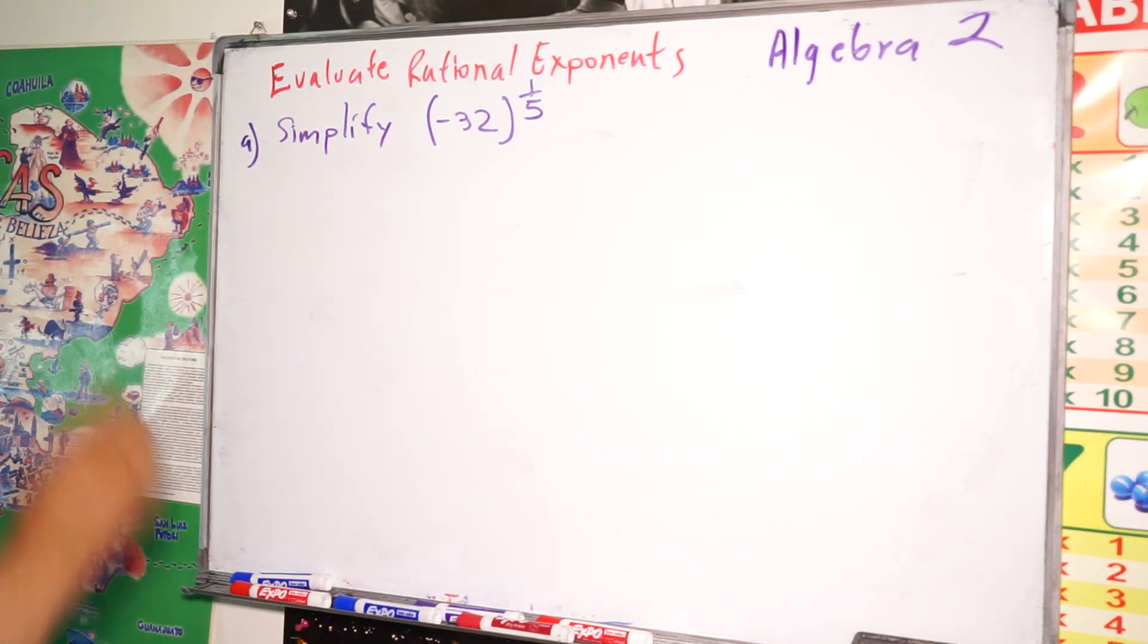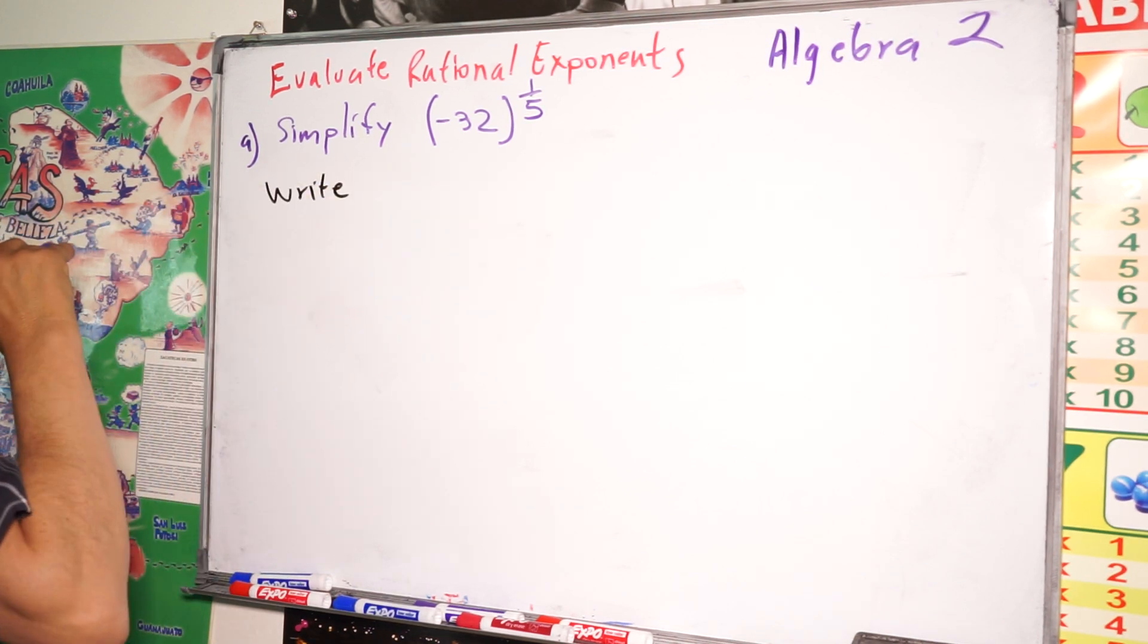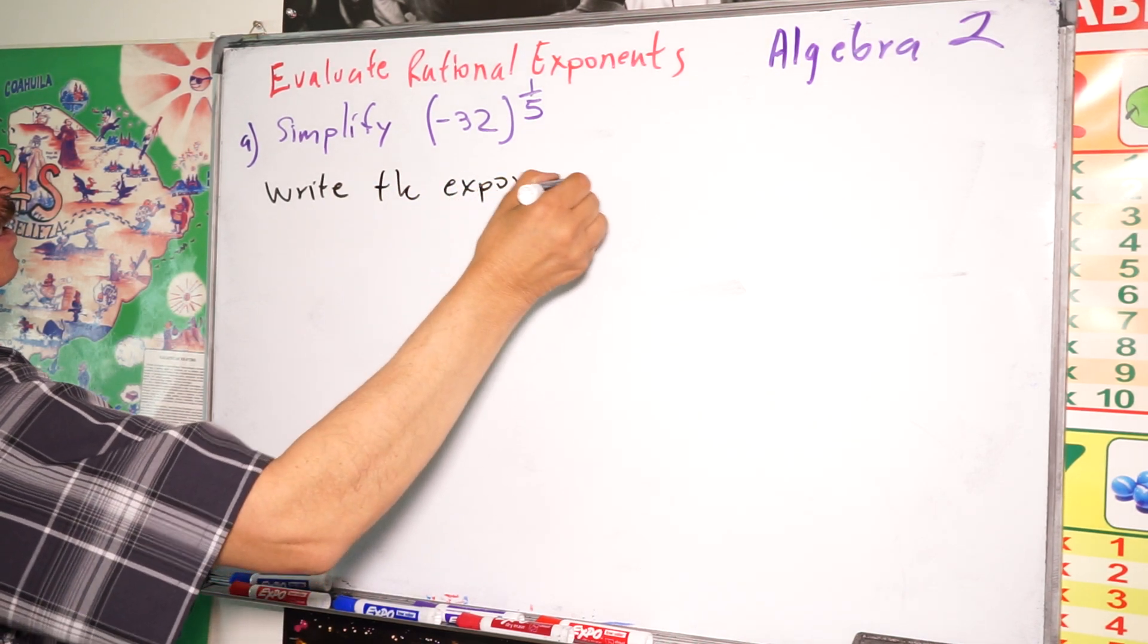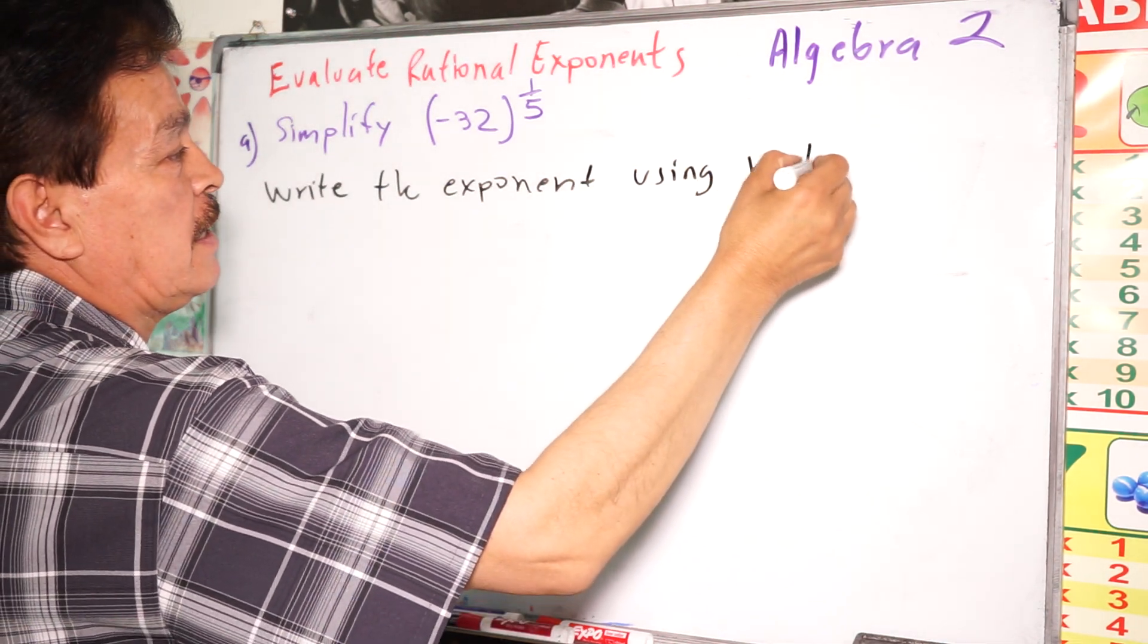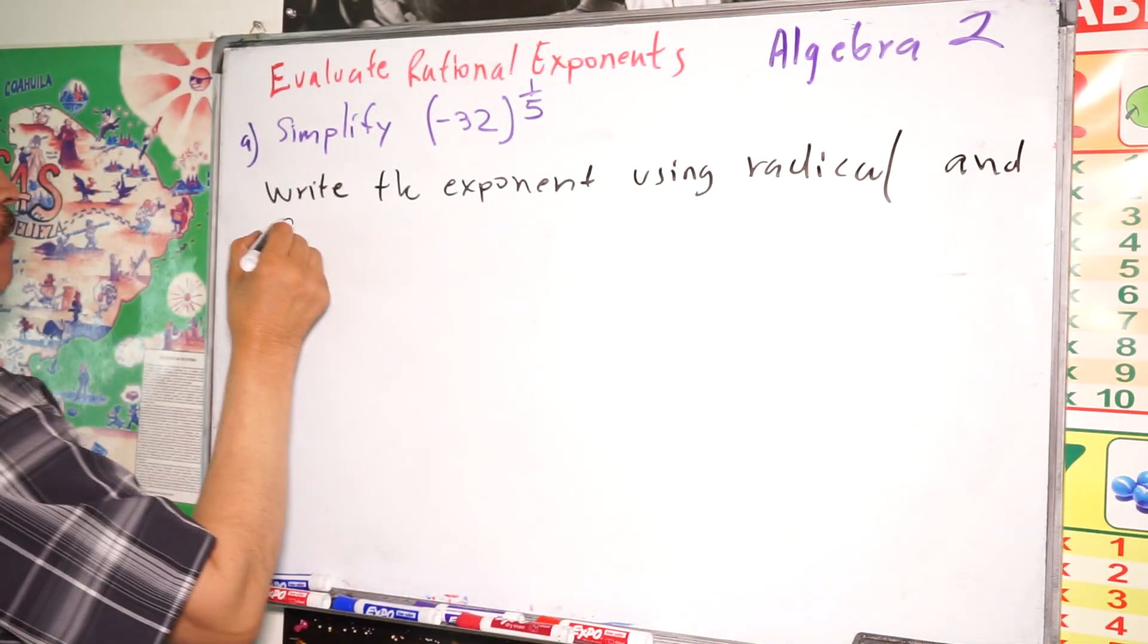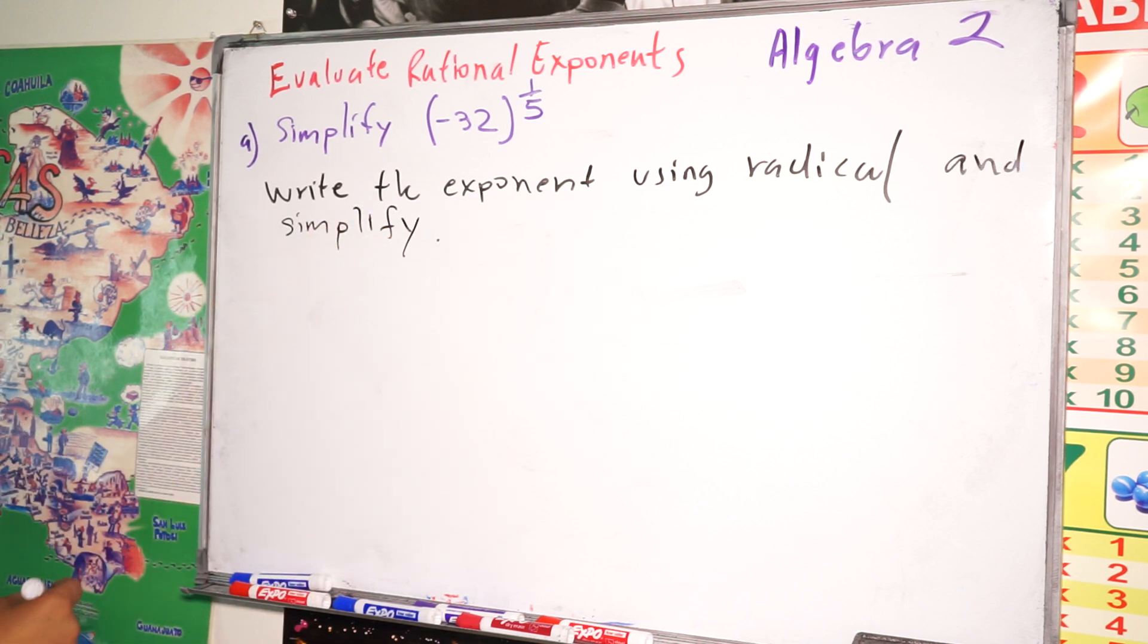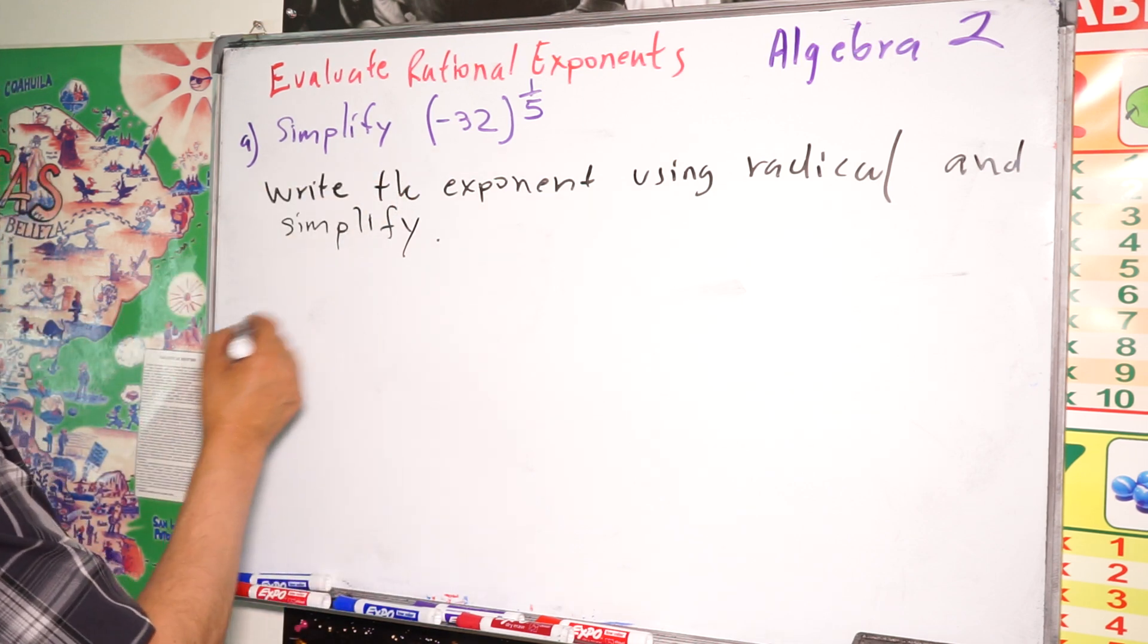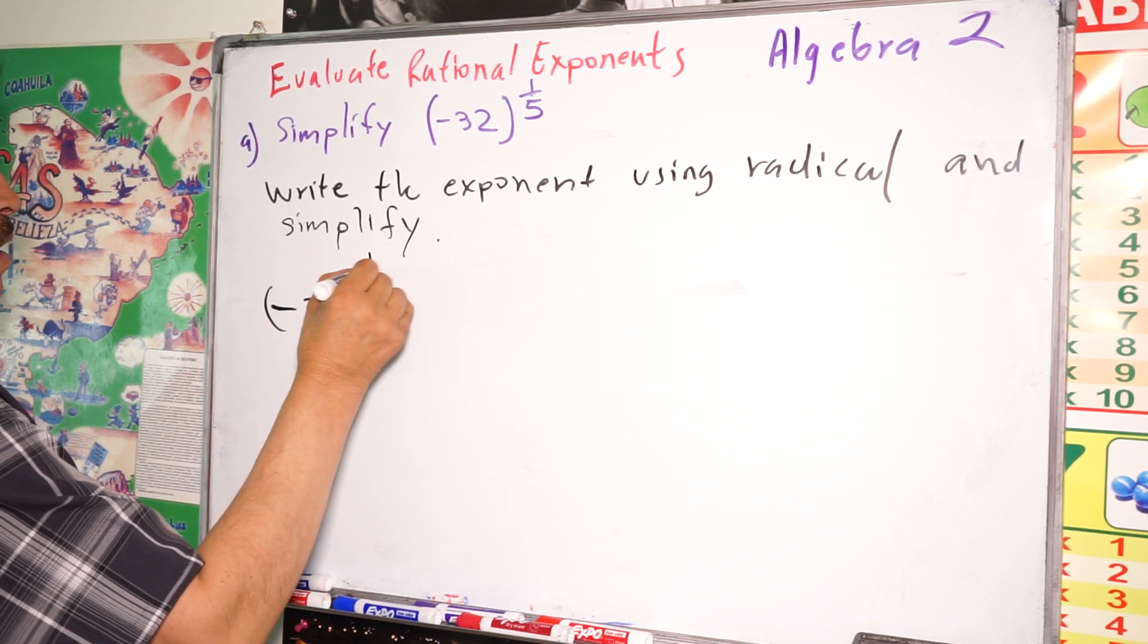So our problem here is to write the exponent using radical and simplify. Our problem is this one. Then the first step, write the number (-32)^(1/5).